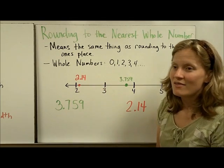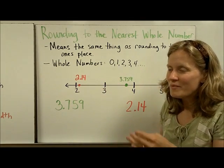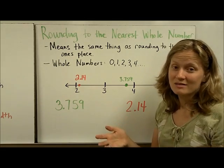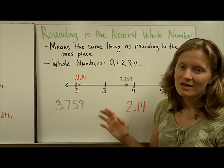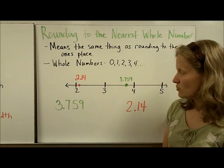Whole numbers are counting numbers. Zero, one, two, three, four. That word whole means that there's no pieces. There's no decimals. So if you were told to round to the nearest whole number, your answer should not have a decimal point or anything after the decimal point.